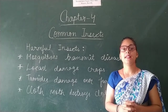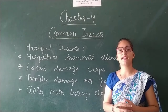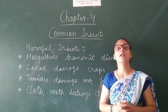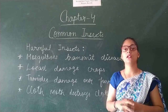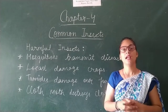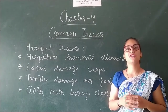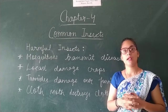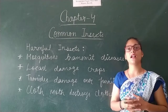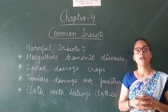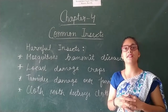Ants and cockroaches spoil our food and spread disease-causing germs. Lice live on our heads and survive by sucking blood from our scalp. House flies sit on garbage and dirt and then sit on our food. If we consume that food, it makes us sick. So these are some harmful insects which cause various diseases.